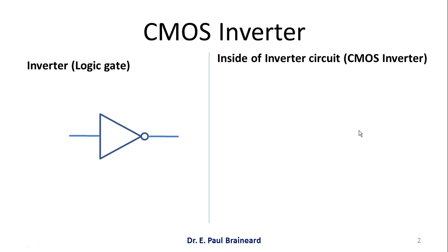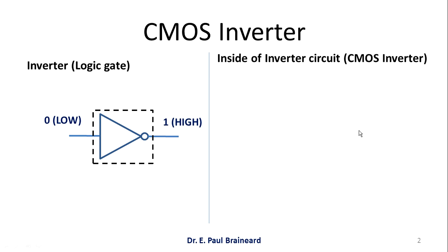This is how the circuit symbol or the logic gate representation of an inverter looks like. Let me assume this like a black box, since I really do not know what exactly is inside. The operation of this inverter circuit: if I give a low input, I get high output. If I give a high input, I get low output. So the inversion is happening — whatever state you have, whether low or high, it gets inverted at the output. That is the reason why it is called an inverter.